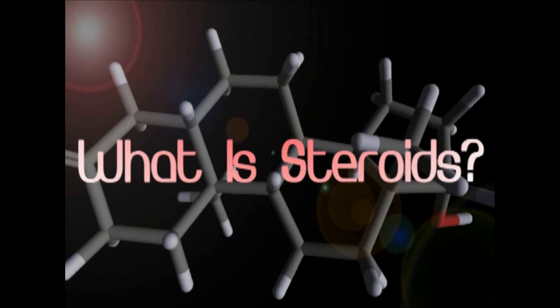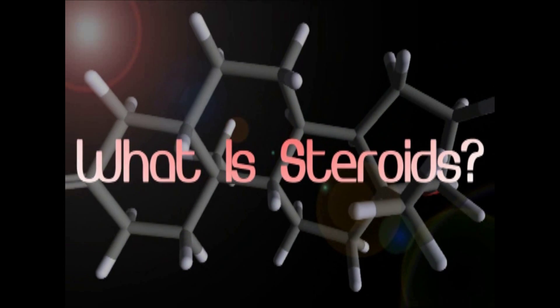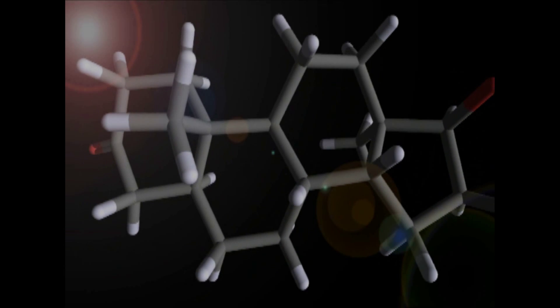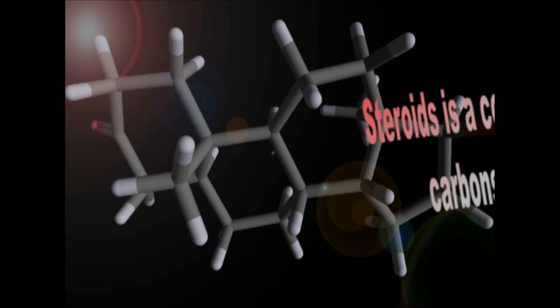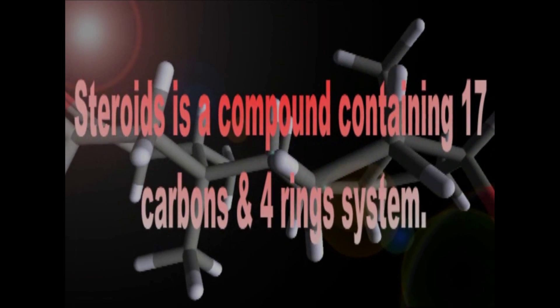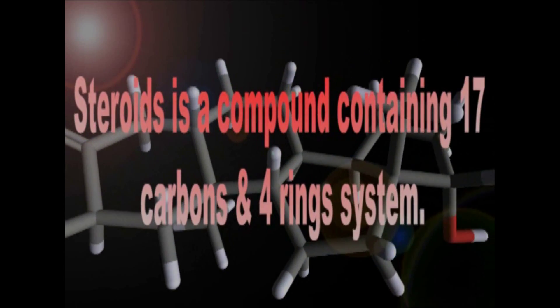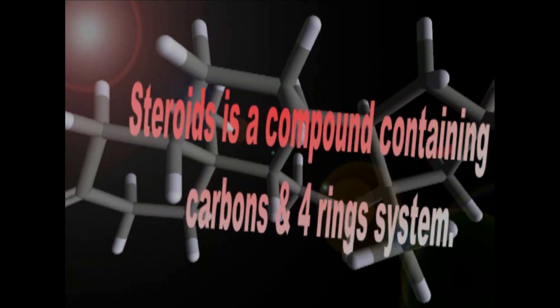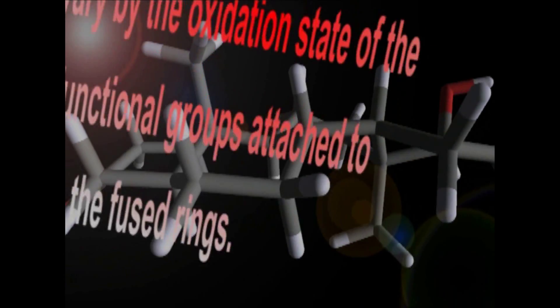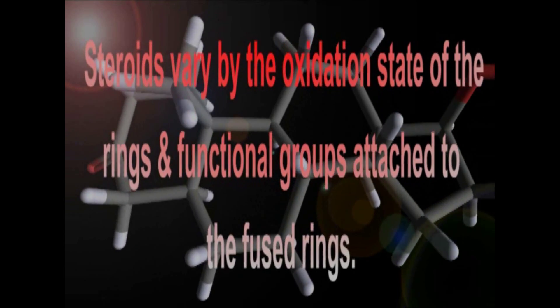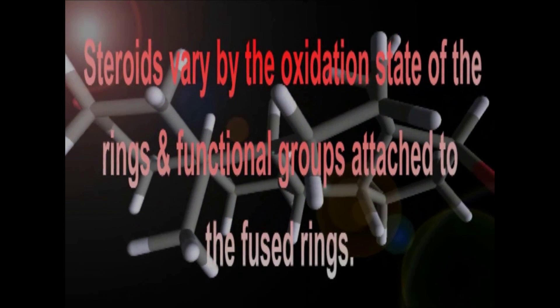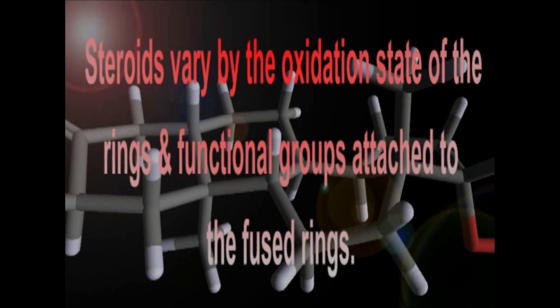What are steroids? Steroids are compounds containing 17 carbons and a 4-ring system. Steroids vary by the oxidation state of rings and the functional groups attached to the fused rings.